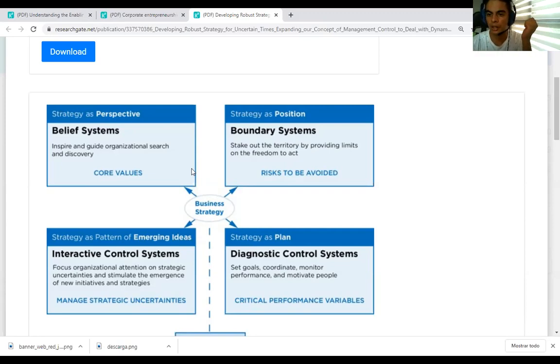then you can categorize your control systems in the organization that you are studying. So this is where the framework becomes very helpful because then you can study each system kind of separately and then you can